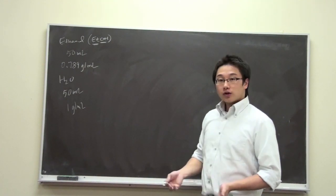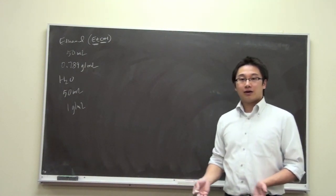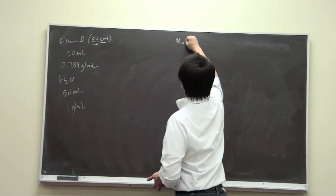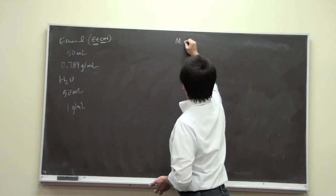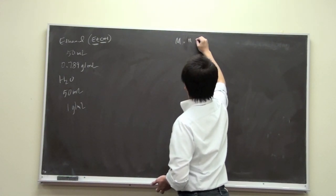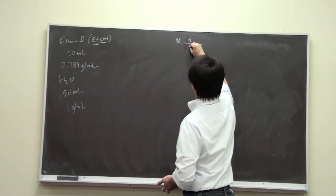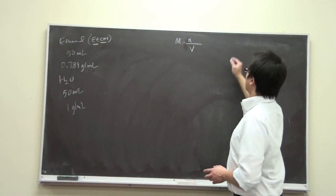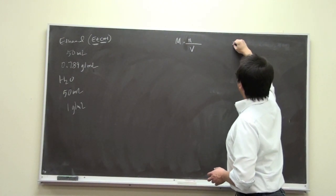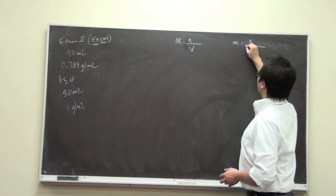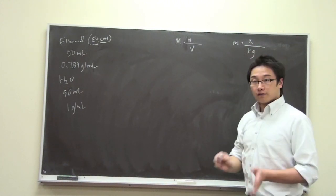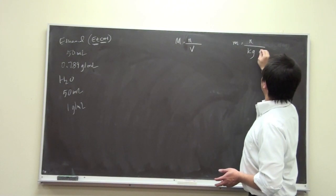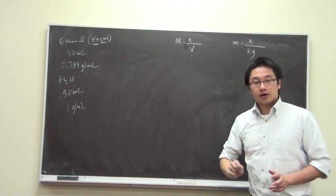And the question is trying to ask you to find the molarity and the molality of the solution. So let me write down the equation for molarity. The moles of solute over the volume in liters of the solution, the total volume of the solution. And the molality is the moles of solute over the kilograms of the solvent.